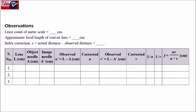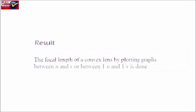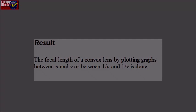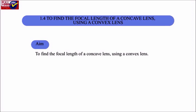Observations and Result: The focal length of the convex lens is found by plotting the graph between u and v, or between 1/u and 1/v. Experiment 1.4 Aim: To find the focal length of a concave lens using a convex lens.